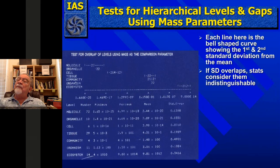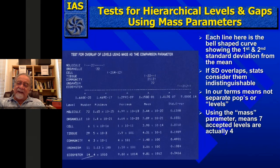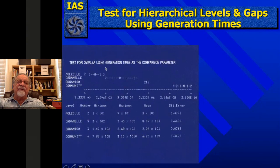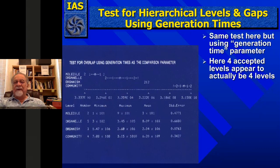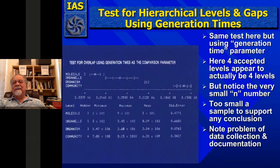Is it different for mass versus length versus linear or information values, or is it the same? We eventually went to multi-parametric analysis. This one tests for overlap using generation times — how much time does it take to build something of the next level? Here again you see four levels but only have data for four, so it doesn't test across all of them. The four accepted levels appeared to actually be four levels in this case, though we had very small N numbers. This is the kind of thing you don't get biologists to do — they don't look across all these levels.